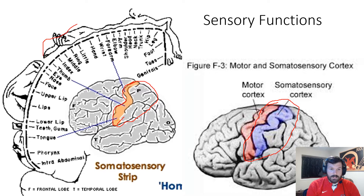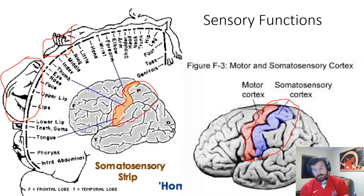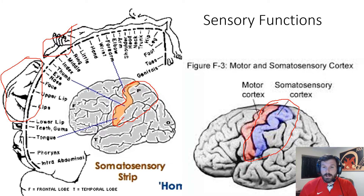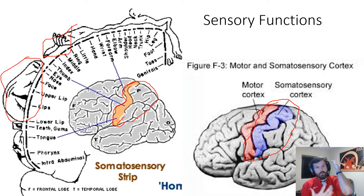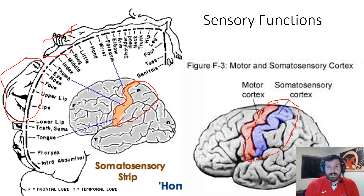Once again, there's a homunculus for the somatosensory strip showing which areas have more sensation — the face, toes, and fingers are very sensitive. If you tap your finger on your lip, you feel it more in your lip than your finger. Touch your elbow and you feel it more in your finger than your elbow. When we want to feel something soft, we use our hands or face — not our elbow — because those areas simply have more neural connections for sensing.